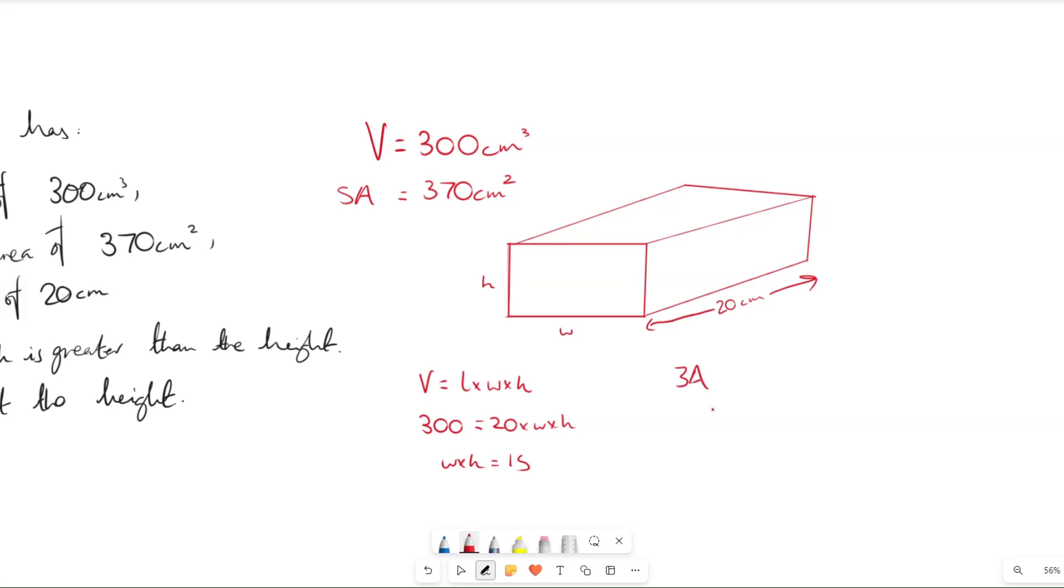The surface area is going to be two lots of every face that we can see, these three faces. So it's going to be two lots of 15, because this is 15 in this face, plus two lots of height times 20, so we've got 20h, plus two lots of width times 20, which is 20w. And if we simplify that, we get 30 plus 40h plus 40w.